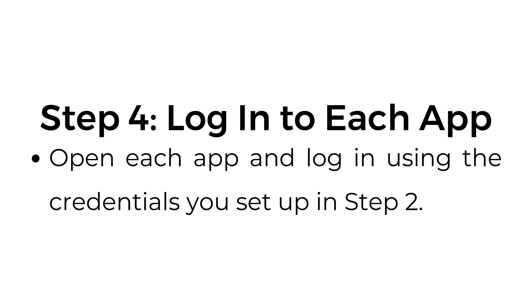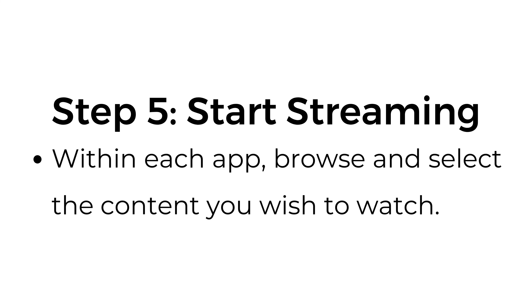Step number four: log in to each app. Open each app and log in using the credentials you set up in step two. Step number five: start streaming. In each app, browse and select the content you wish to watch.